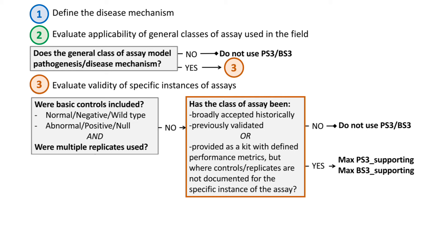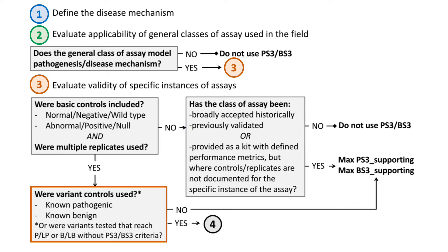However, an exception can be made for assays that are broadly historically accepted, previously validated, or provided as a kit with defined metrics, although the authors suggest using these assays at only a supporting strength of evidence, PS3 supporting or BS3 supporting. The use of variant controls, or controls that are known to be pathogenic or benign based on other lines of evidence, helps to establish the dynamic range of an assay, and is important for clinical interpretation.